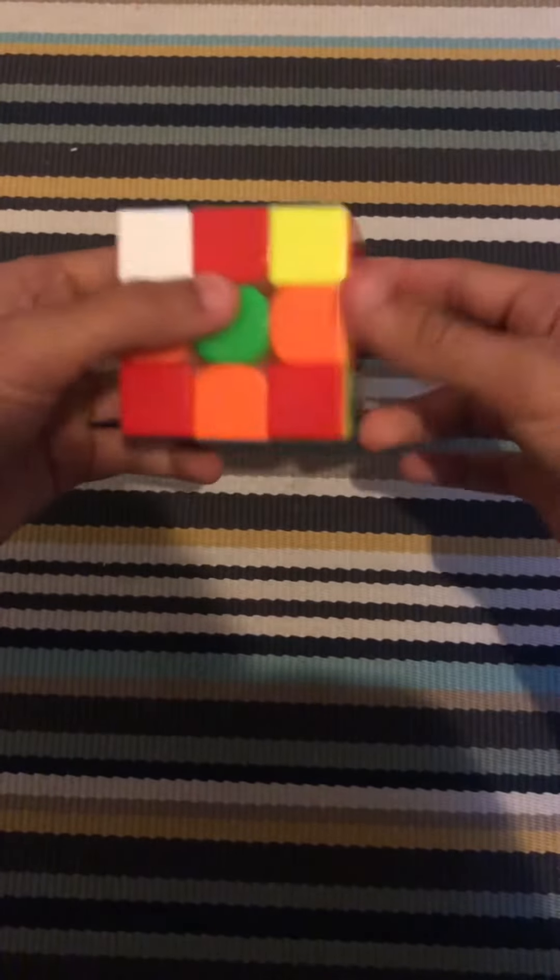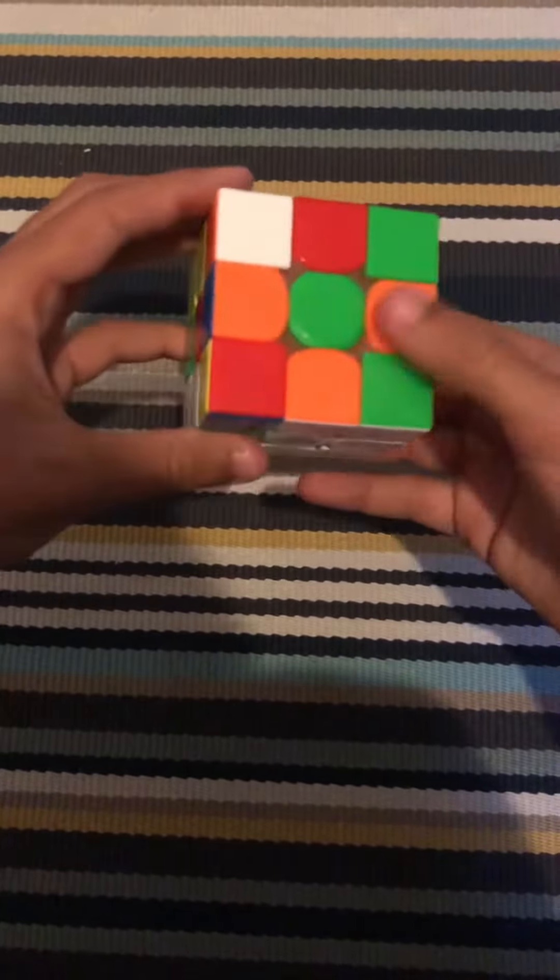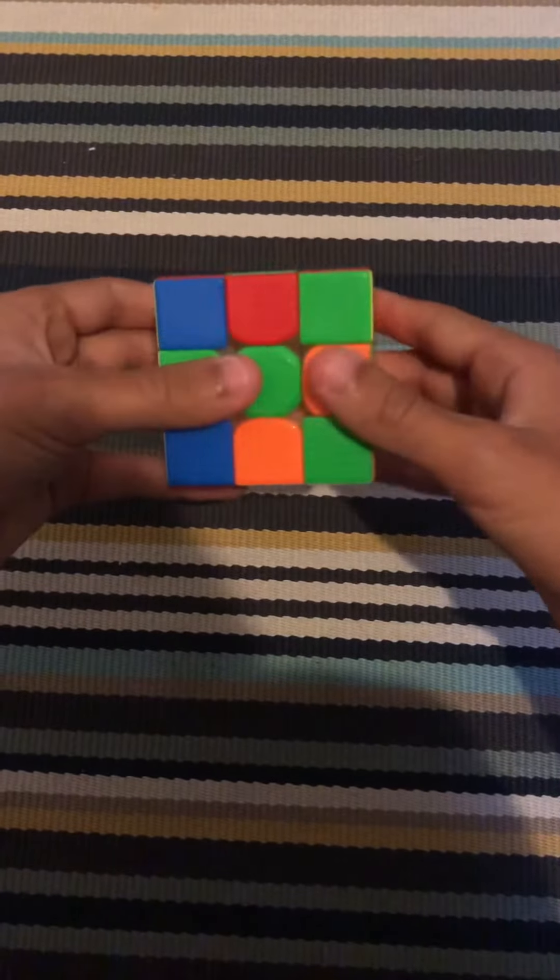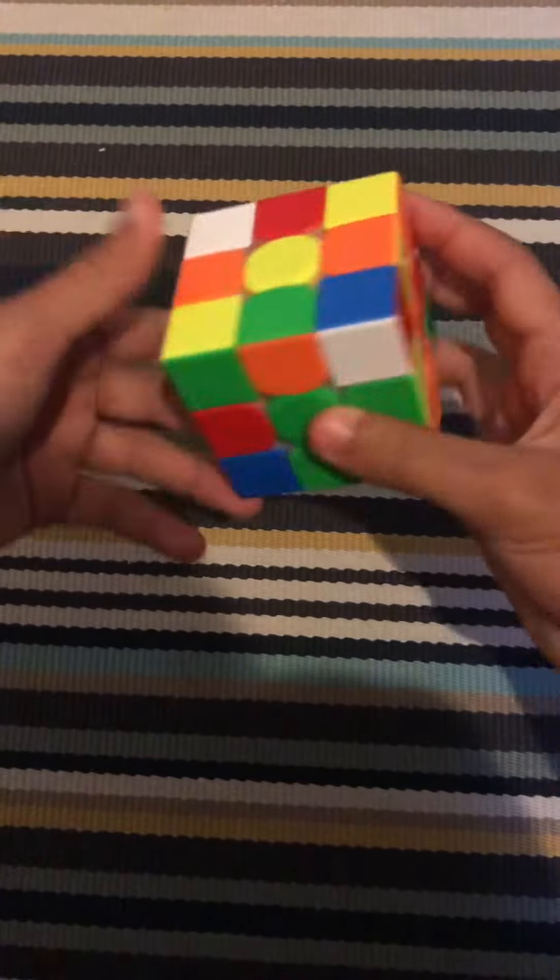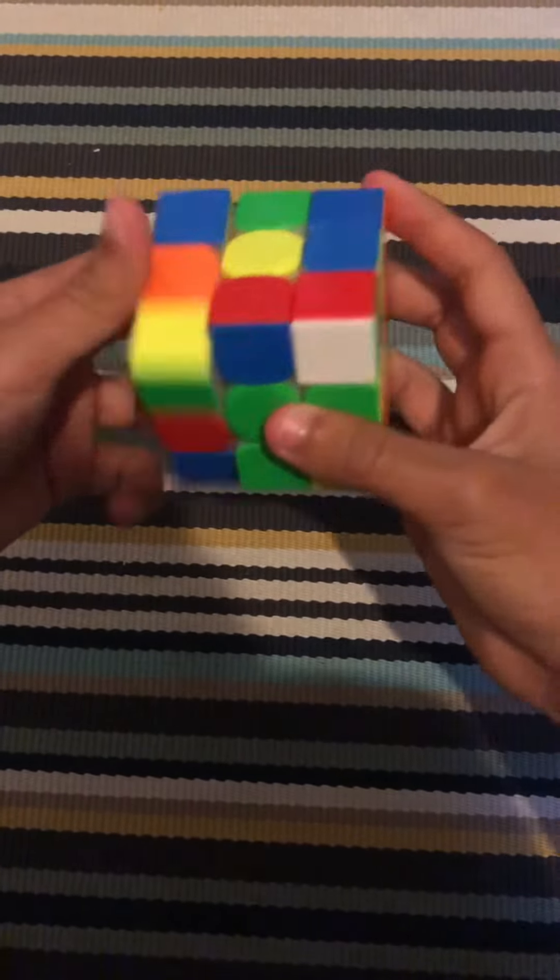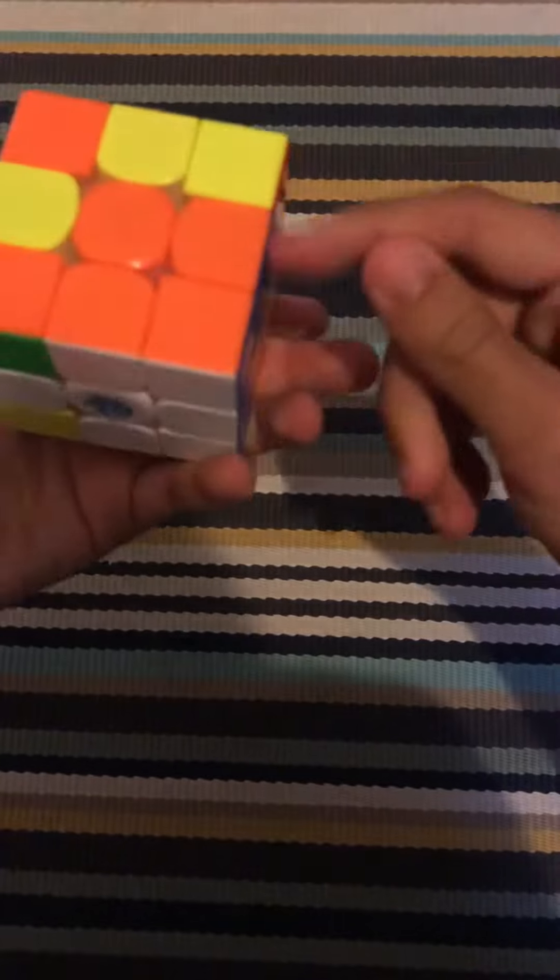So what I could do is a D', an R, an L', and then a D', and then an F' to make the cross. I already know that this pair is here, so I make that pair like so, and then insert it.